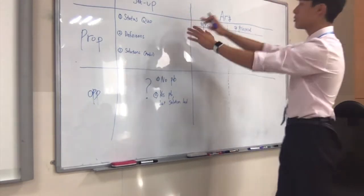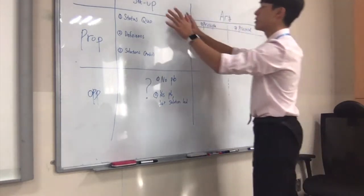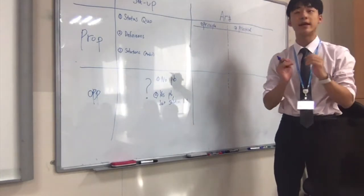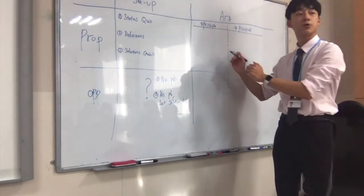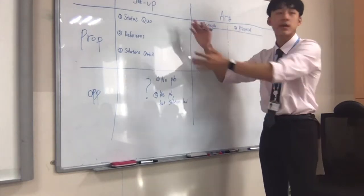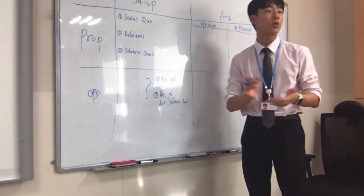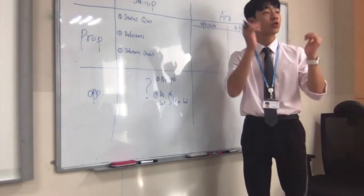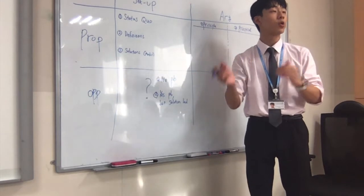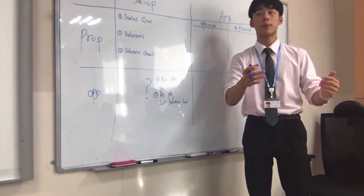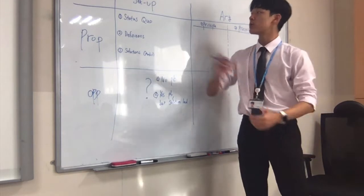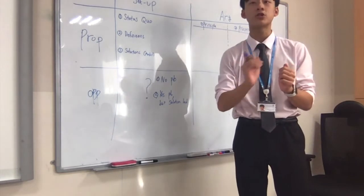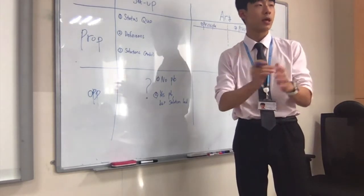A case can always be divided into the arguments and the setup. The setup is when you try to lay the foundations so that it's easier to introduce your actual arguments. This includes identifying the problem, saying why there's a problem in our society, talking about what you want to achieve and what your end goal is. After you introduce all of these, if you go into the arguments, the flow is going to be much smoother. Setup is where you introduce your team's case line, what your team wants to achieve, and the direction of your arguments.